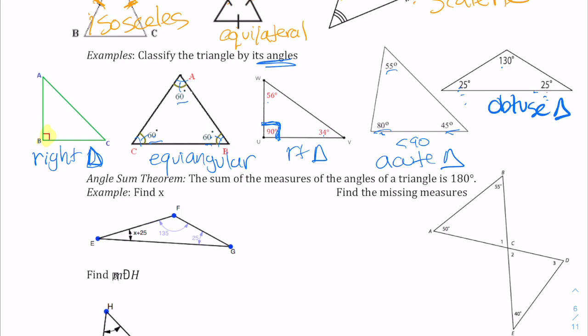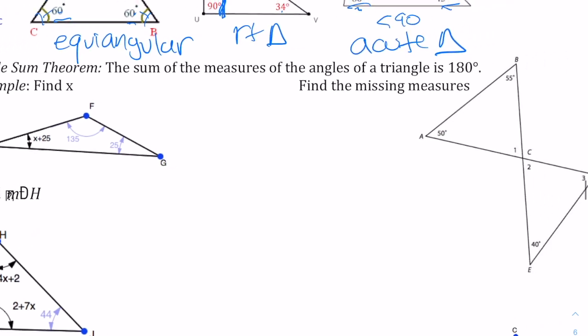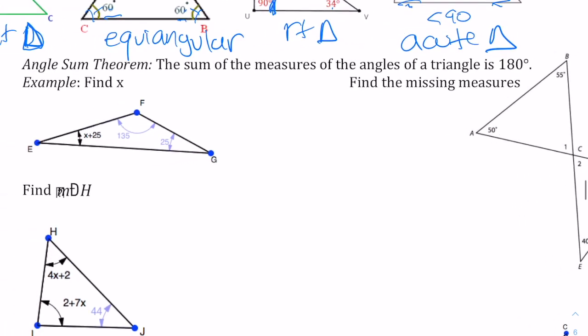One of the things you looked at was the angle sum theorem. A theorem is something that you can prove. The angle sum theorem states that the sum of the measures of the angles in a triangle equals 180 degrees. This was what you looked at in the first few activities to verify they all added up to 180 degrees.